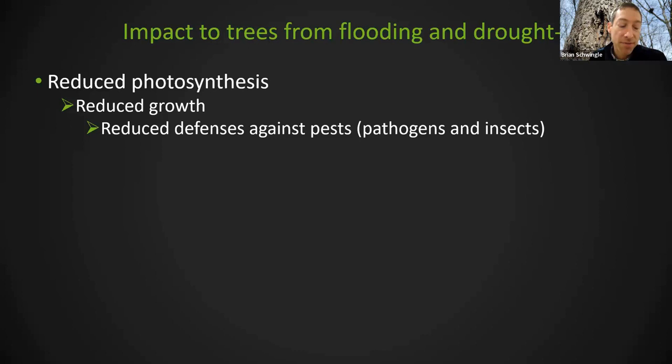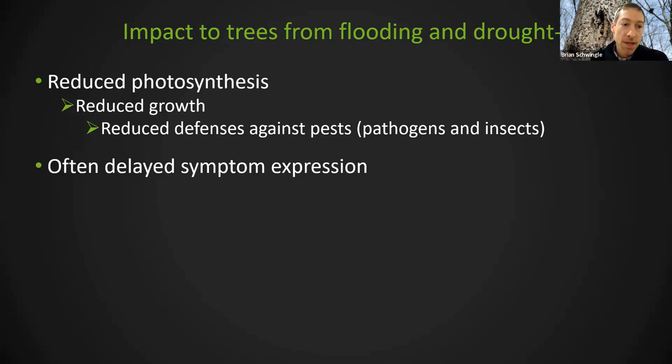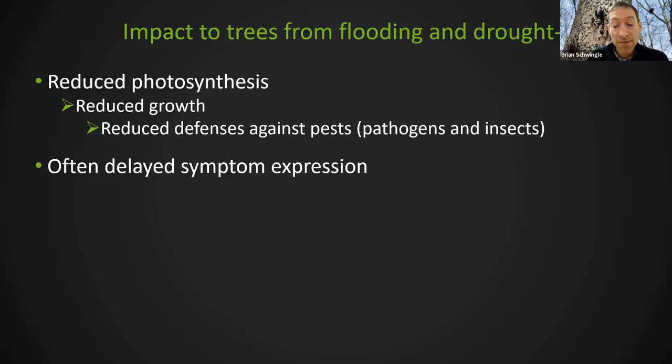Plants produce chemicals that protect themselves against pests and pathogens. When they are suffering from reduced photosynthesis due to flooding and drought, they don't produce many of those defensive compounds anymore. For both flooding and drought stress, frequently you can't visually tell a tree is stressed during the year of the event. Symptoms often show up the next year or even two, three, four, or five years after those events.